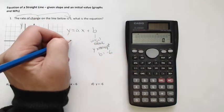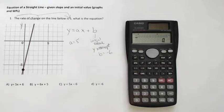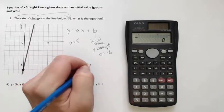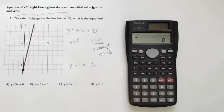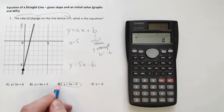And I know that my a, because the problem told me, is 5. So I'm looking for y is equal to 5x minus 6. 5x minus 6, right there.